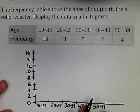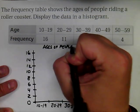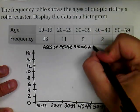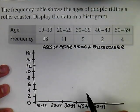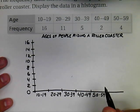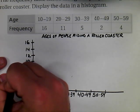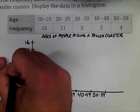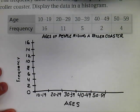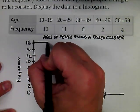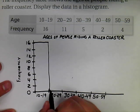I need a heading. Since this shows ages of people riding a roller coaster, I'll write that as my title: 'Ages of People Riding a Roller Coaster.' The whole purpose of graphs is to make data easy to understand, so a clear title is essential. Along the side will be our frequency label, and along the bottom will be the ages.